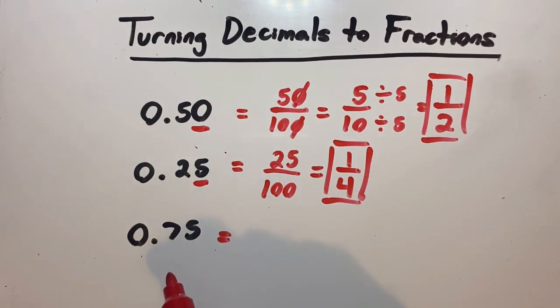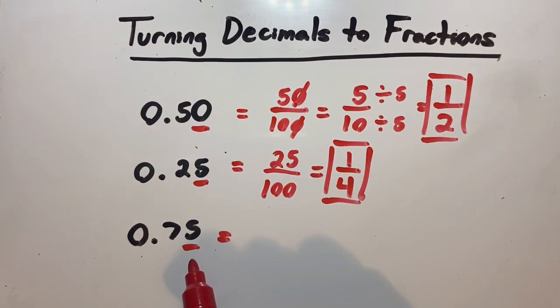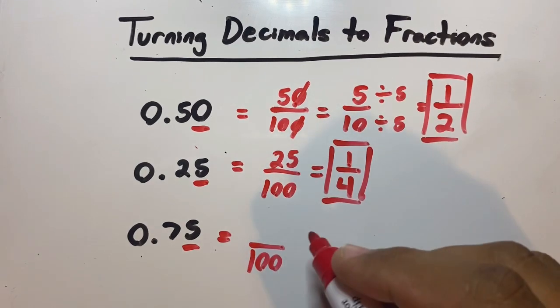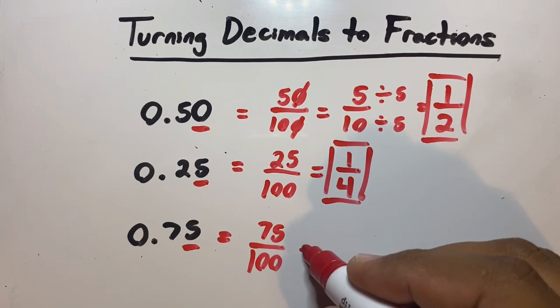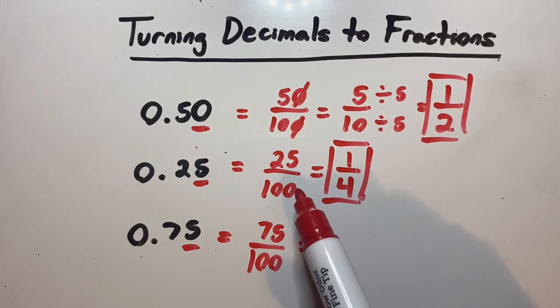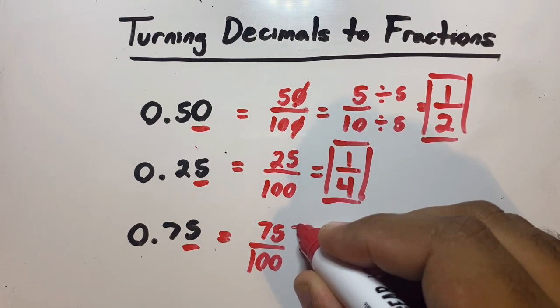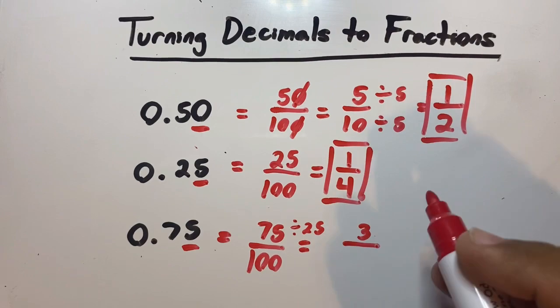Our last example is 0.75. So again, the last digit is in the hundredths place, so 100 will be our denominator and 75 will be our numerator. We can still use 25. We know it takes three quarters to make 75 cents, so one quarter can fit in this three times. So 75 divided by 25 is 3, and 100 divided by 25 is 4.